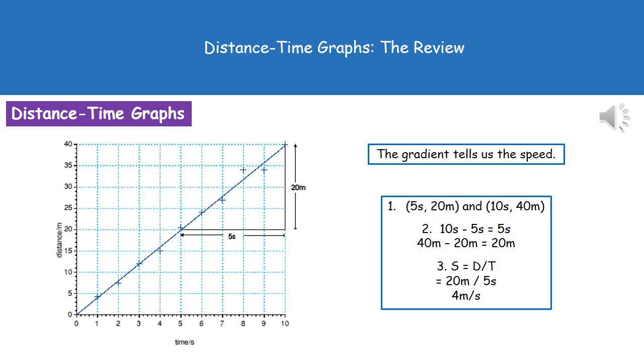First we need to work out the differences between them. 10 seconds minus 5 seconds gives us a difference of 5, and 40 meters minus 20 meters gives us a difference of 20. Using our speed equals distance divided by time calculation, plug in our numbers: 20 divided by 5 gives us our answer of 4 meters per second.